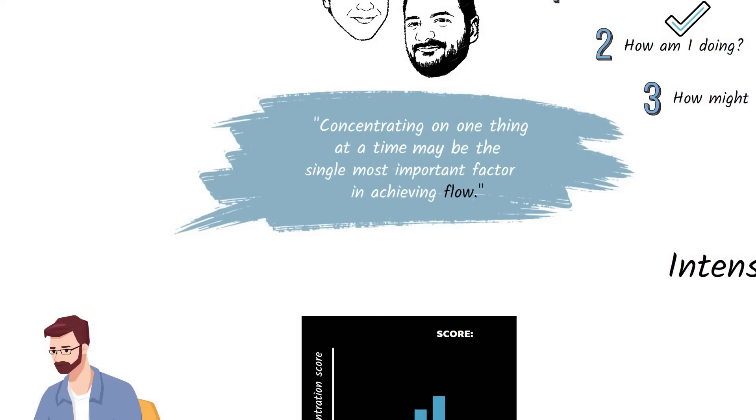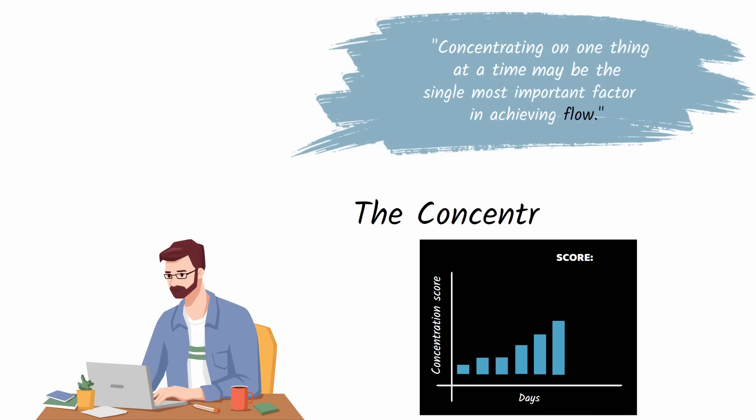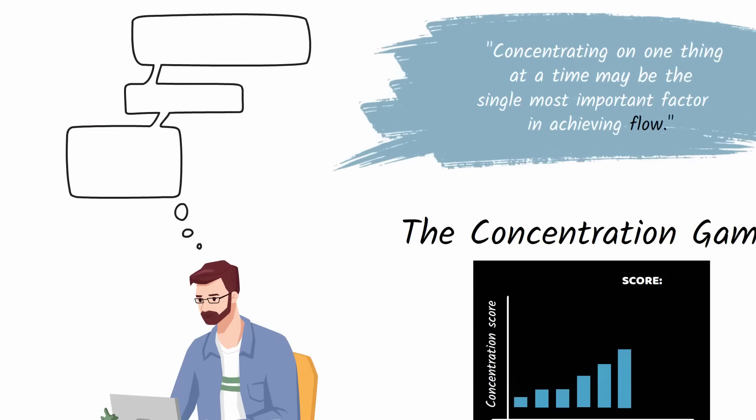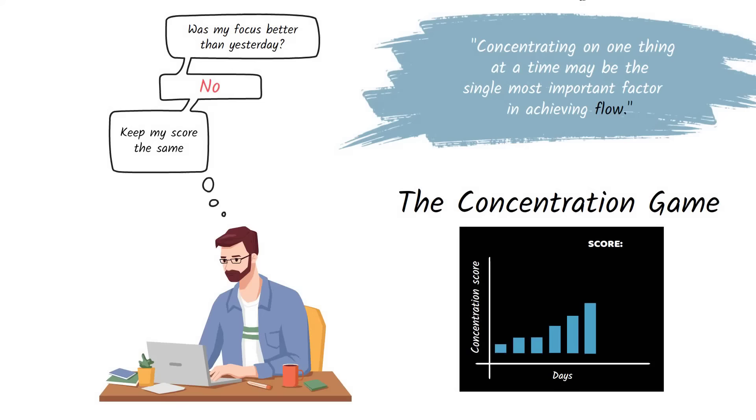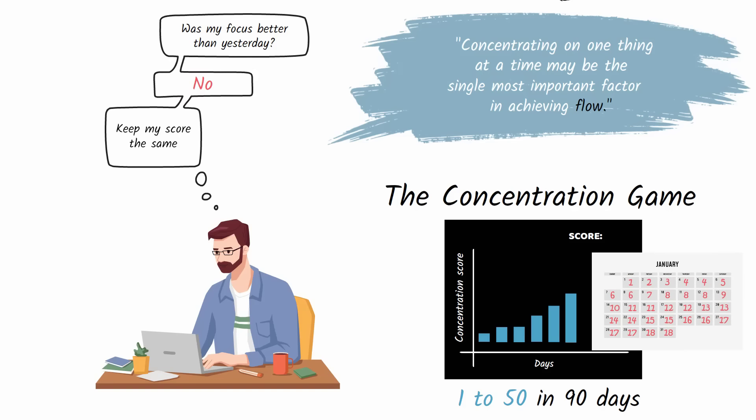I've started playing the following game to improve my concentration and increase the odds that I experience flow each day. At the end of each day, I assess whether my concentration was subjectively stronger than yesterday's. If it was, I add a point to my score. If not, I keep my score the same. My goal is to move from one point to 50 points over the course of 90 days. I keep track of my score on a calendar every day. I currently have a score of 26.